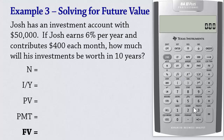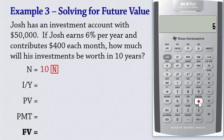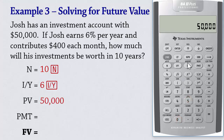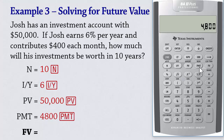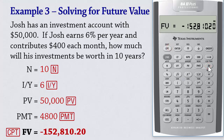So we input 10 N. For interest rate, we input 6 IY. We input 50,000 present value and $4,800 payment. We then compute the future value, which gives 152,810.20.